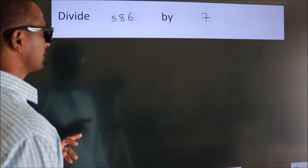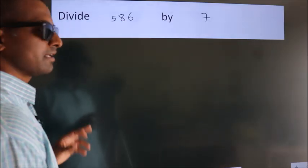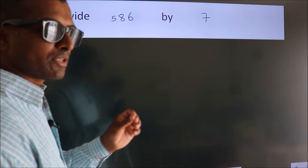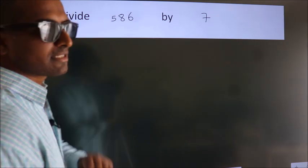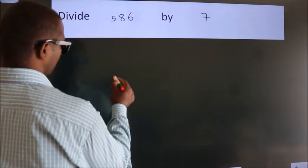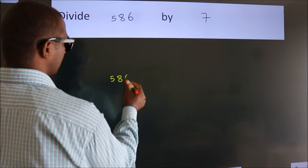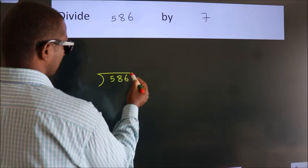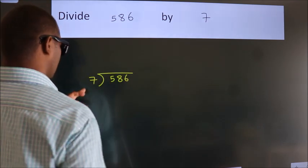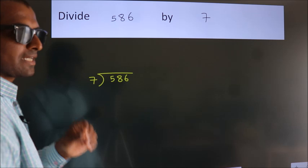Divide 586 by 7. To do this division, we should frame it in this way: 586 here, 7 here. This is your step 1.